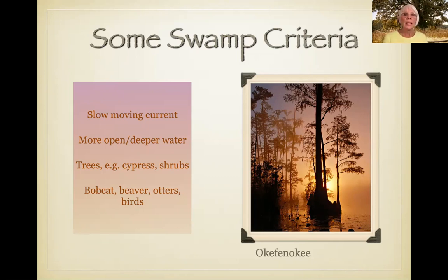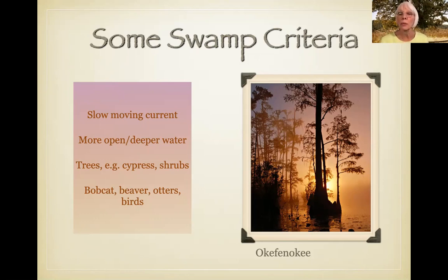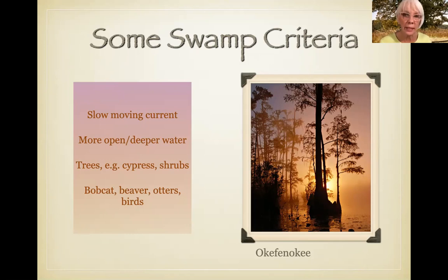Not all of the Okefenokee is actual swampland — some is drier and has more conifer-type trees. The Okefenokee in 1937 was declared a preserve by FDR. He saw what it was, and among all the other things he accomplished, he made the Okefenokee a preserve. To this day it's still partly a reserve, partly a refuge, partly private land — a convolution of different ownerships. But you can go there, you can fish, you can recreate. It's an amazing nearly 700 square miles.